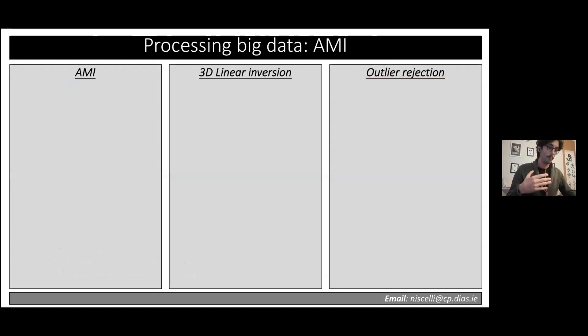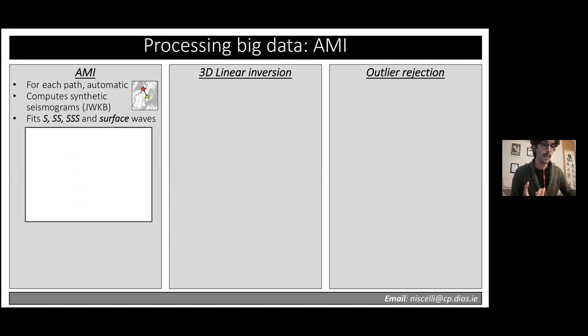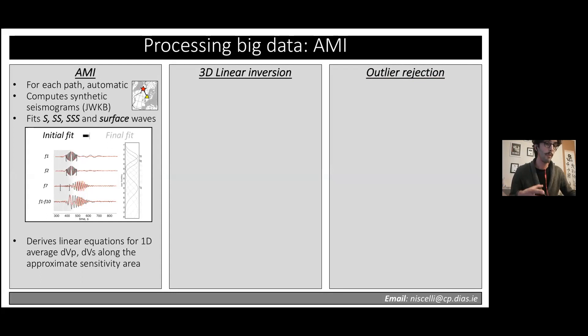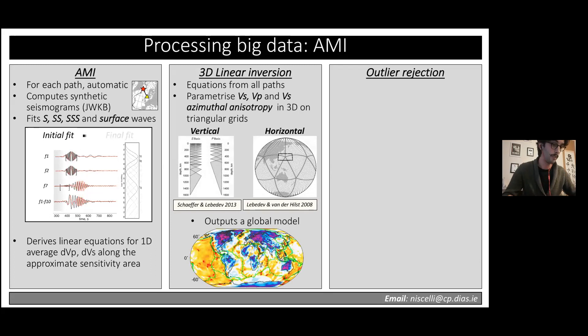To handle this large amount of data, we use a fully automated procedure that breaks the inversion process into three steps. First, seismograms are fed into the automated multiple inversion, which computes synthetic seismograms and fits the S, multiple-S, and surface wave phases to the observed ones to derive, for each single source-station path, the set of linear equations for the variation of Vp and Vs. These independently derived equations are then combined into a large linear system and solved in three dimensions for the distribution of Vs, Vp, and azimuthal anisotropy, producing global models optimized for the area of interest.